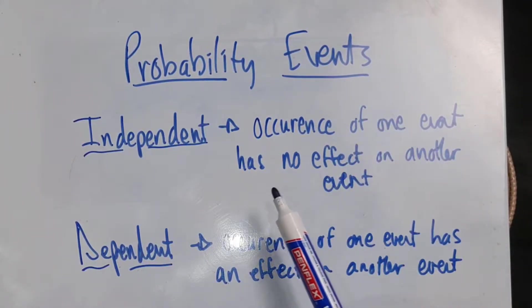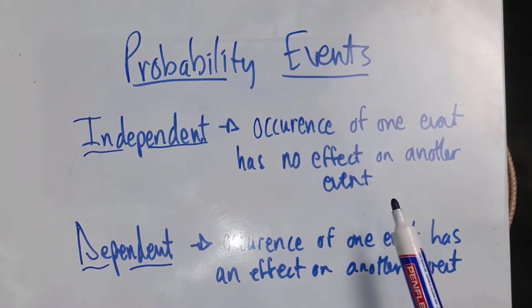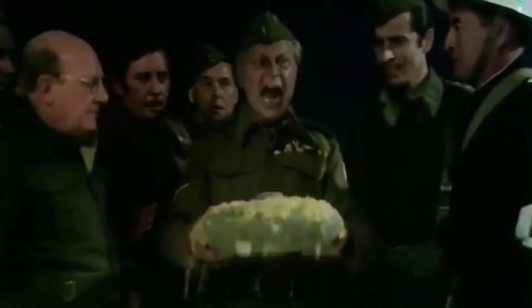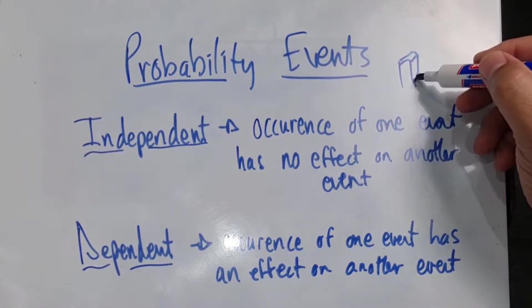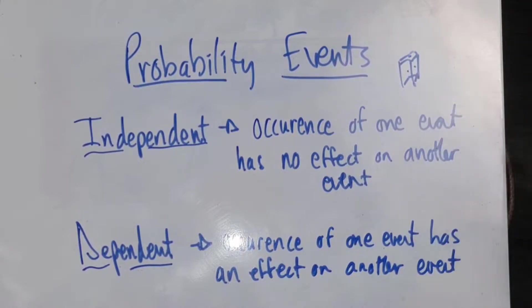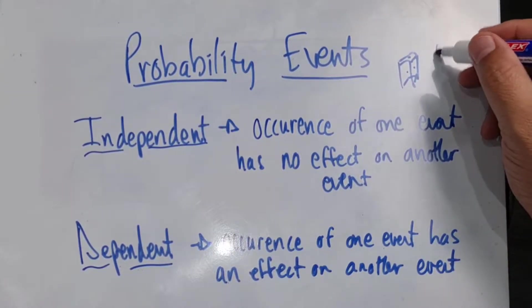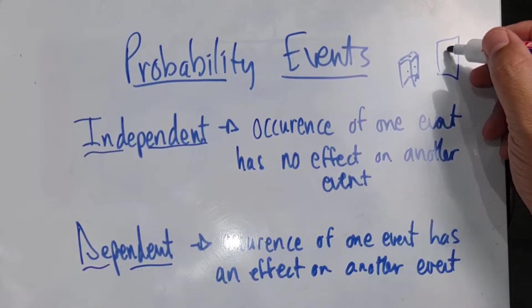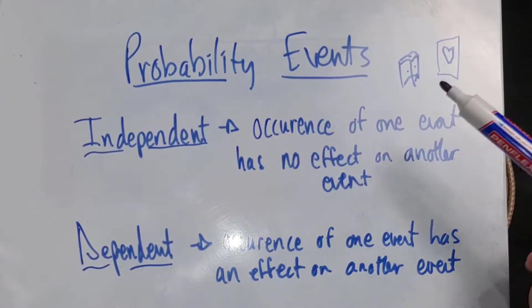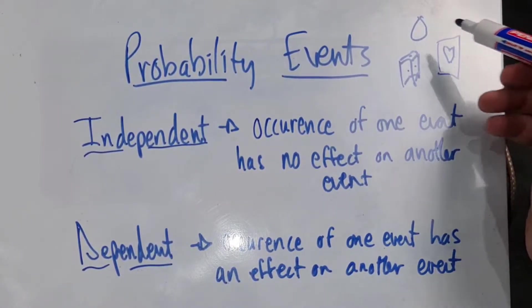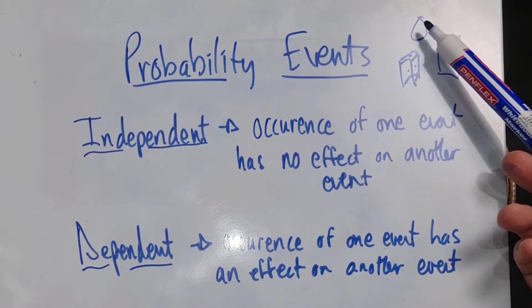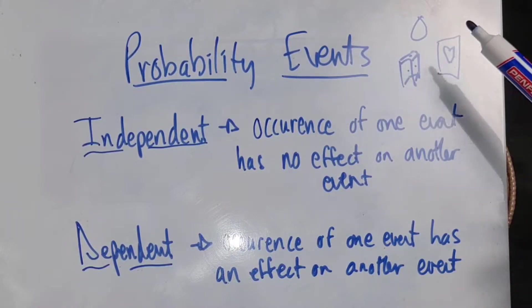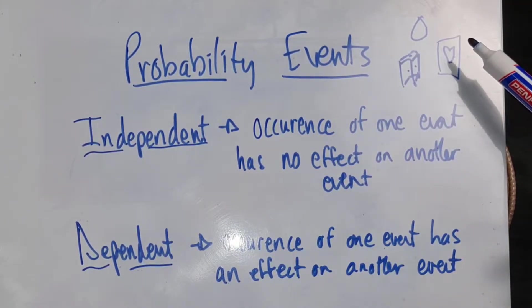Okay, for example if I am rolling a dice and I'm busy with a pack of cards, or I'm tossing a coin, me getting heads, rolling a dice and getting four, and pulling the ace of hearts, the one has nothing to do with the other. Okay, they are independent events on their own.